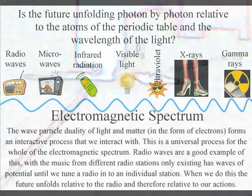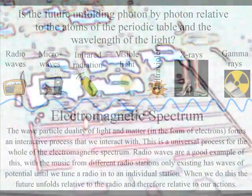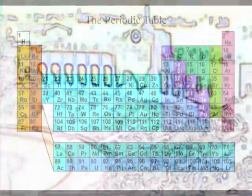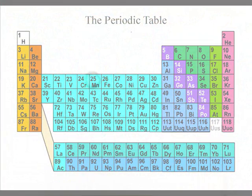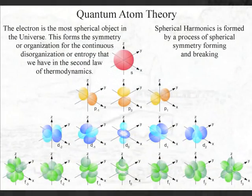The future is unfolding photon by photon with each new photon-electron coupling or dipole moment. It is the spontaneous absorption and emission of light relative to the atoms of the periodic table that form the ever-changing world of our everyday life that we see and feel as the continuum of time.